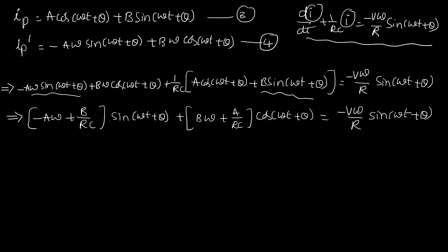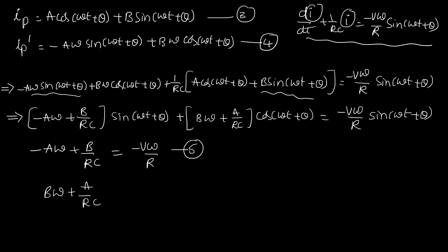We compare both sides. The sin coefficient gives: −Aω + B/RC = −Vω/R — call this equation 5. Comparing the cos coefficient: Bω + A/RC = 0, since there is no cos term on the right-hand side — call this equation 6. Now solve equations 5 and 6 to get the expressions for A and B. Because the calculation is straightforward, directly writing the expressions.